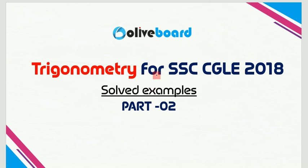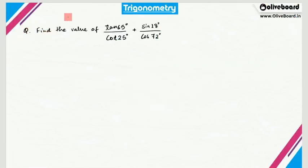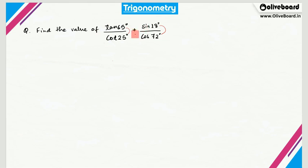Now let's move on to our questions. The first question is: find the value of tan 65° divided by cot 25°, plus sin 18° divided by cos 70°. When this question comes in your exam, you have to directly see that 65 and 25 when added become 90°. Again, 18° plus 72° gives us 90°. So these two angle pairs are complementary angles.